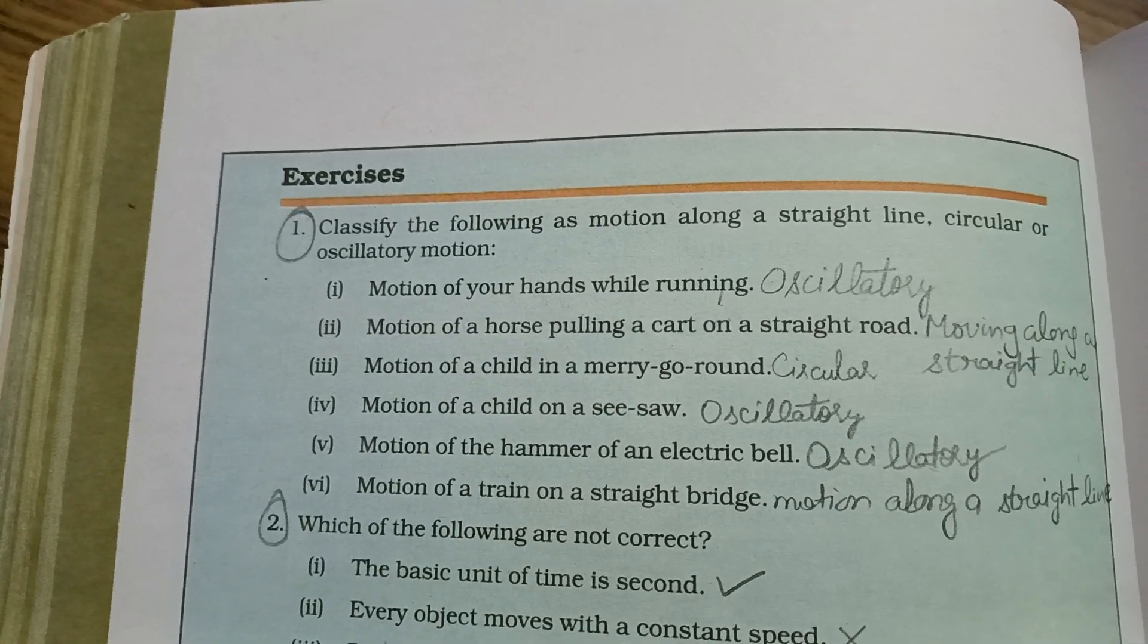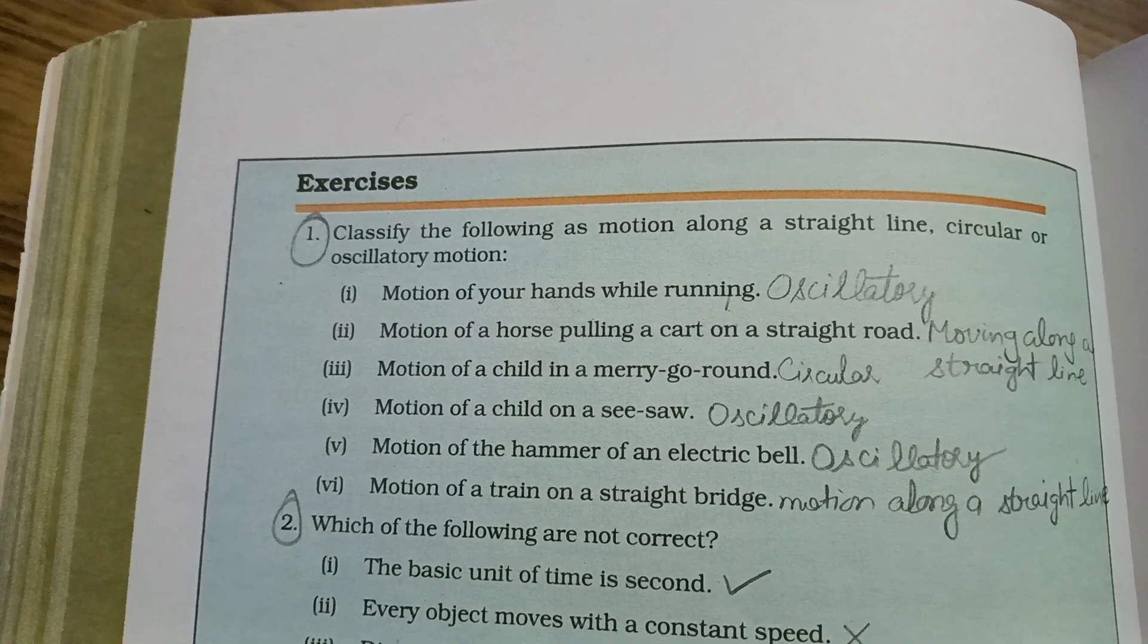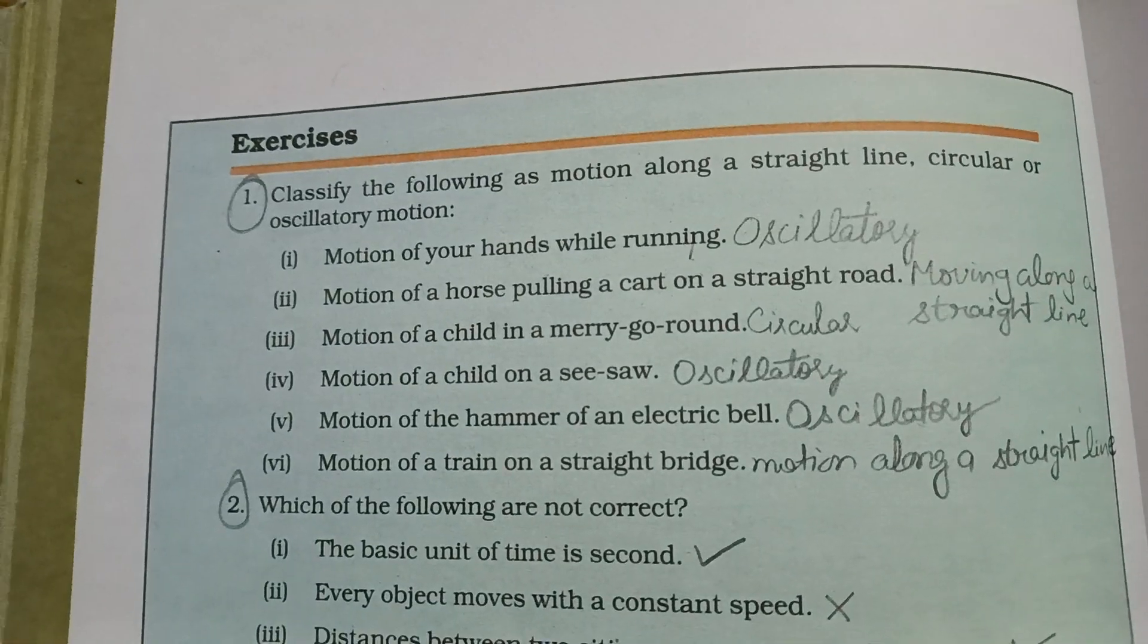Next hai, humare paas humein classify karna hai ki kaun sa motion straight line hai, ek straight line mein ja raha hai koi bhi object, ya circle mein ghoom raha hai wo, ya oscillatory matlab to and fro motion hai like pendulum.